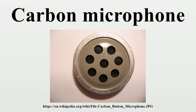Early AM radio transmitters relied on carbon microphones for voice modulation of the radio signal. In the first long-distance audio transmissions by Reginald Fessenden in 1906, a continuous wave from an Alexanderson alternator was fed directly to the transmitting antenna through a water-cooled carbon microphone. Later systems using vacuum tube oscillators often used the output from a carbon microphone to modulate the grid bias of the oscillator or output tube, to achieve modulation.